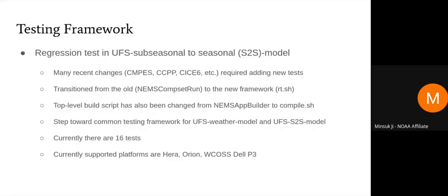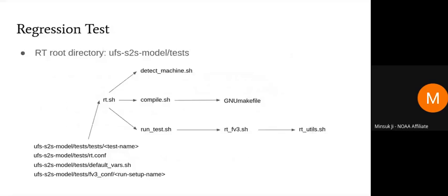For the UFS S2S model, there are currently 16 tests, and they are supported on platforms Hera, Orion, and WCOSS Dell phase three. Let me give you a brief overview of the regression test and some examples. The regression test root directory is the UFS S2S model slash test, and rt.sh is the main script, which calls a number of other scripts.